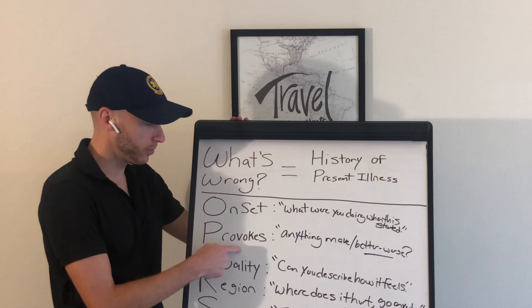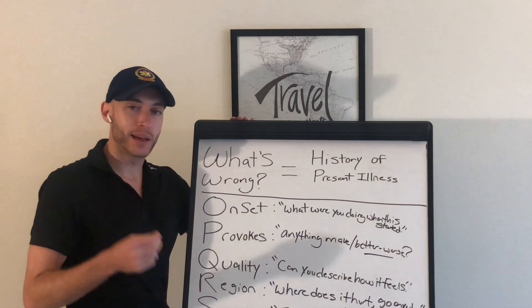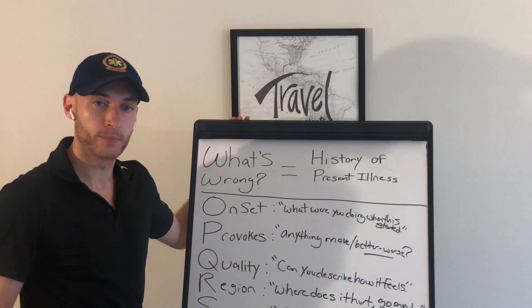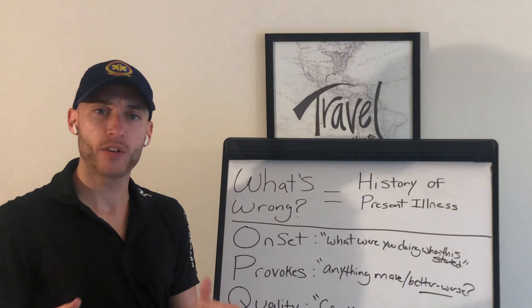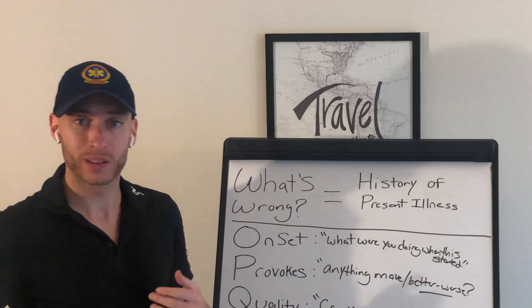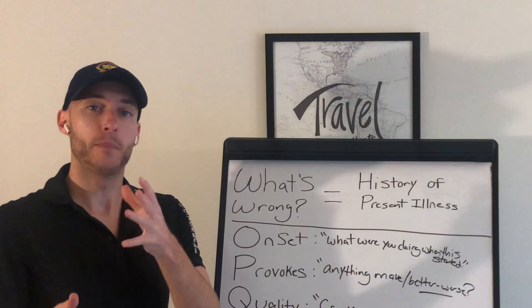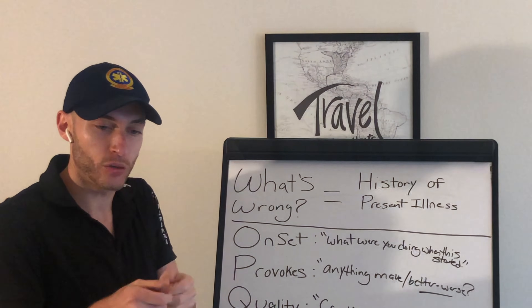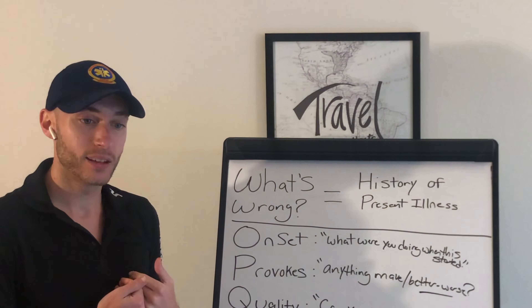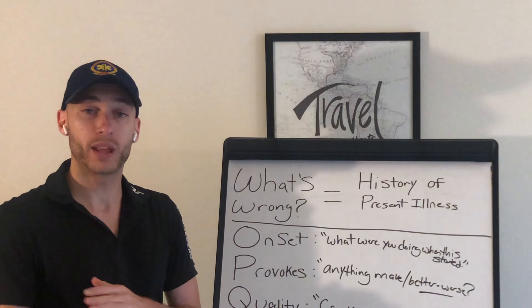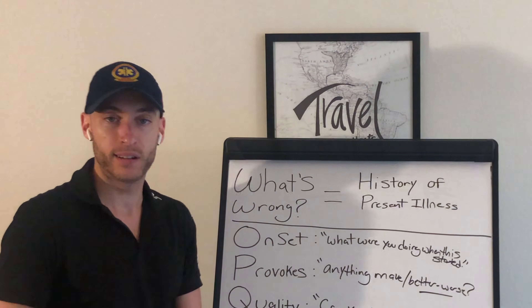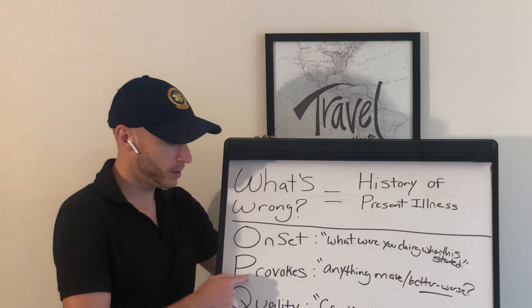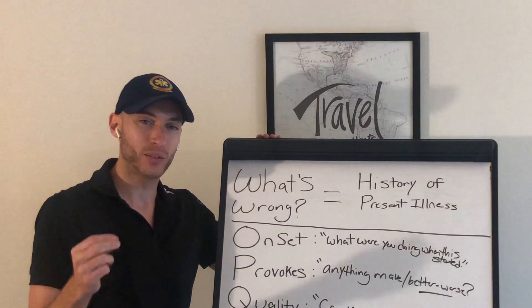P is for provokes — anything that makes their symptom better or worse. If they're having a hard time breathing: does anything make your breathing better or worse? If they're having abdominal pain, chest pain, or leg pain: does anything make the pain better or worse? All you're doing is inserting their symptom. Everyone messes this one up, but it's so simple.